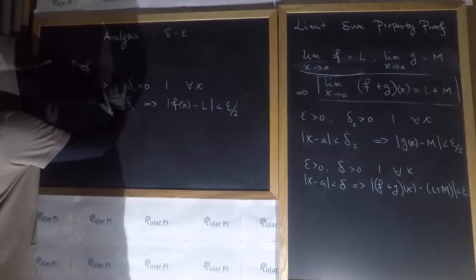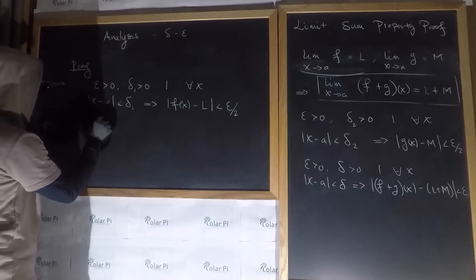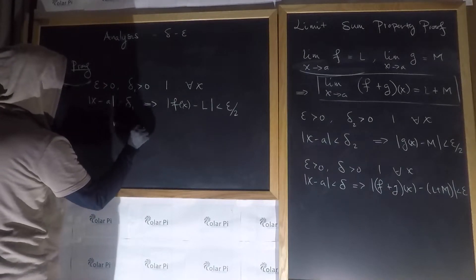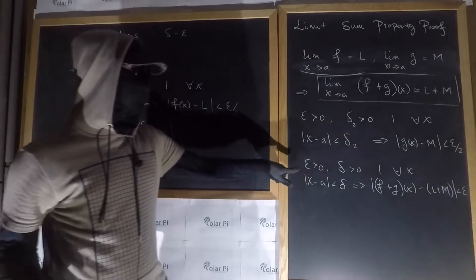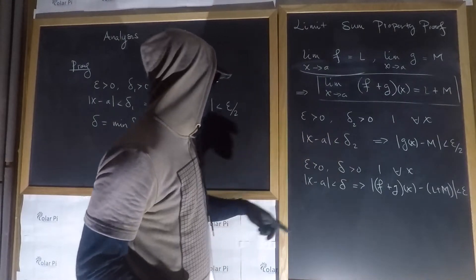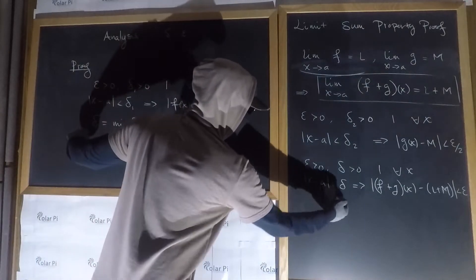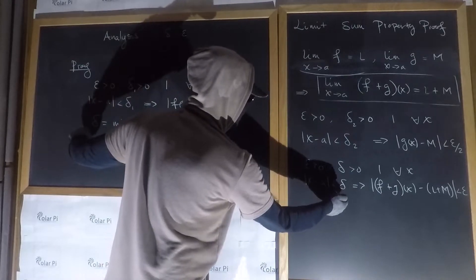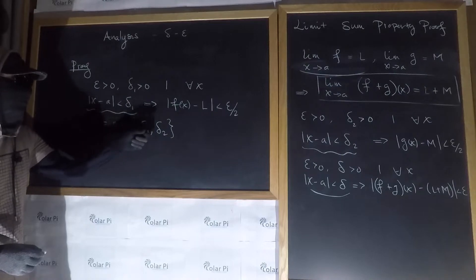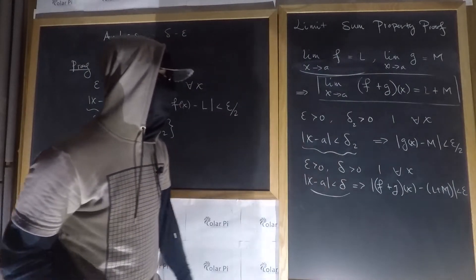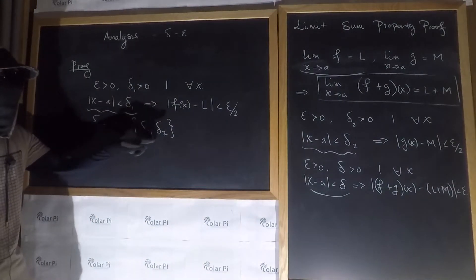We know that both conditions are true. So here's what we're going to do: we're going to let delta equal the minimum of delta one and delta two. If delta is the smaller of delta one and delta two, then for every epsilon greater than zero there's a delta greater than zero — this minimum delta — such that whenever |x - a| < δ, notice that this also implies |x - a| < δ₁ and |x - a| < δ₂, because delta is chosen to be the minimum of the two, so it satisfies both.